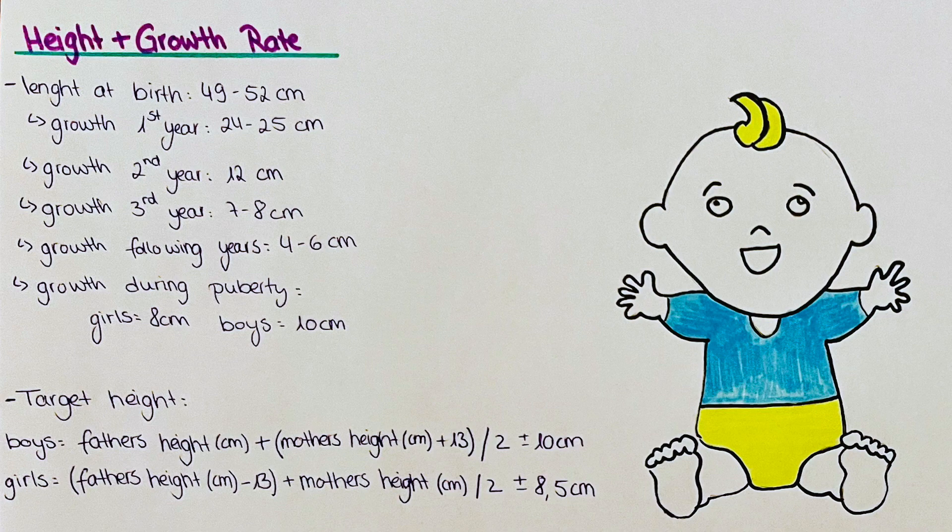Now for the third year, unfortunately we have to memorize the number which is 7 to 8 centimeters. In the following years, the growth stagnates a little bit and it's around 4 to 6 centimeters. Then during puberty there is a growth spurt again where for girls they can grow up to 8 centimeters a year, and boys around 10 centimeters a year. We follow growth curve charts as recommended by the CDC.